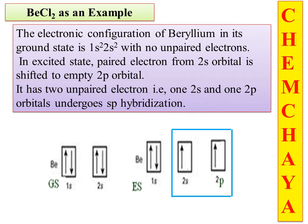Let's look at beryllium chloride. Beryllium has atomic number 4. In the ground state, the electronic configuration is 1s², 2s². In the excited state, one of the 2s electrons is promoted to a 2p orbital, giving two unpaired electrons — one in 2s and one in 2p. These then overlap with each other to form SP hybrid orbitals, each having one electron.